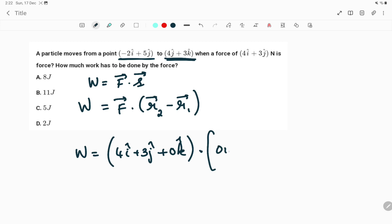Now, r2 vector is 0i + 4j + 3k, and r1 vector is -2i + 5j + 0k. So we calculate r2 minus r1.